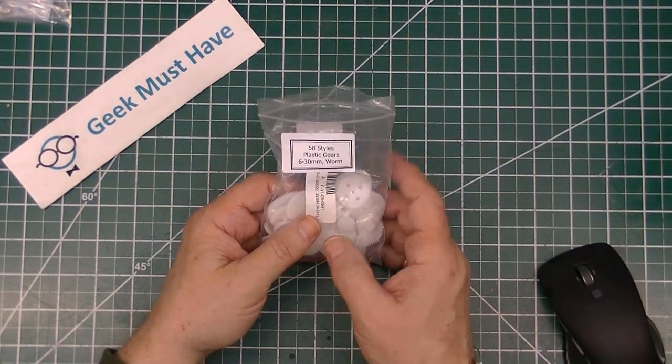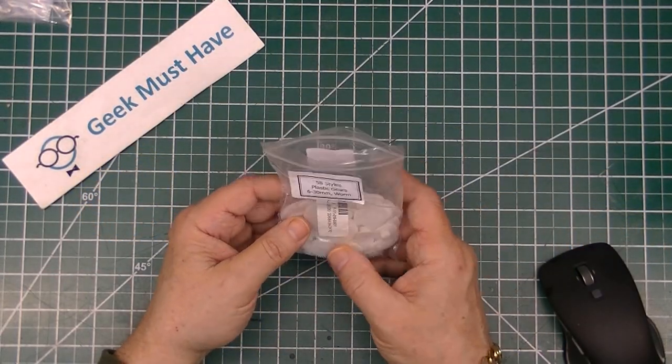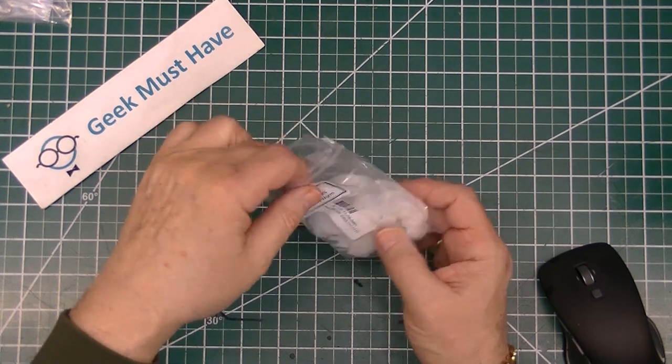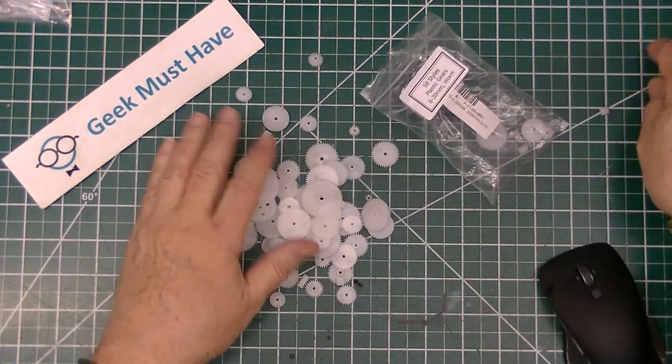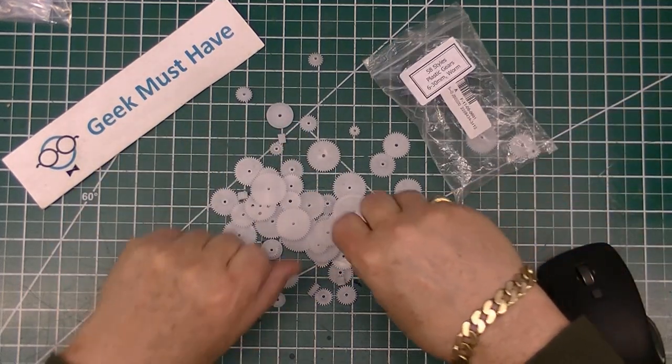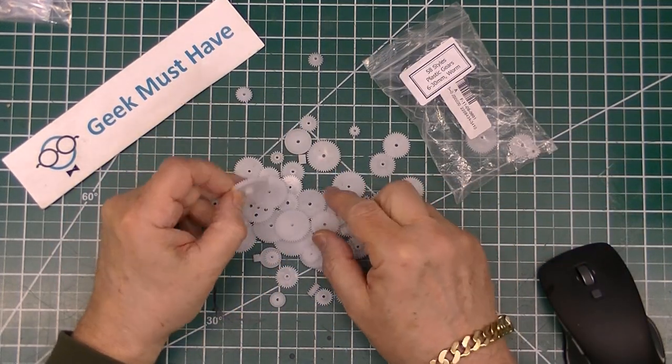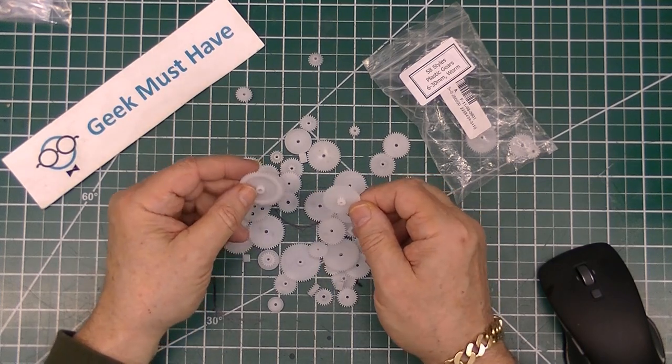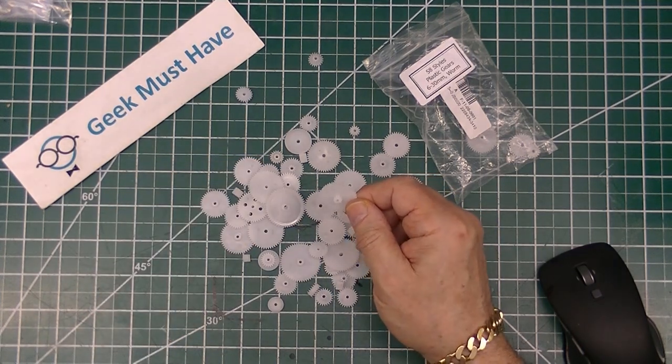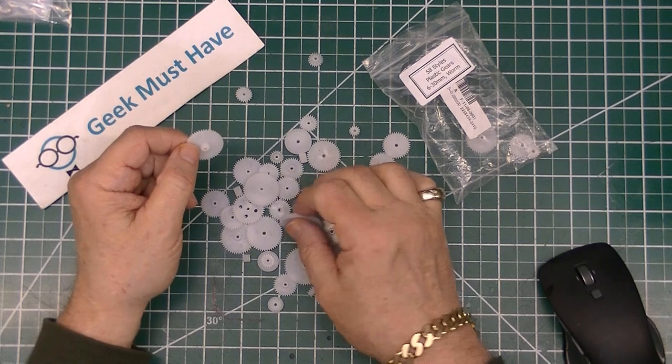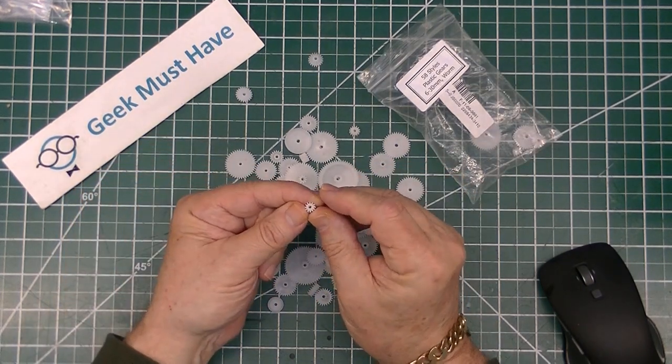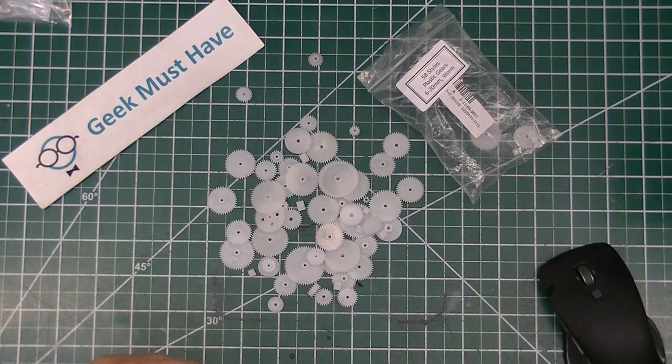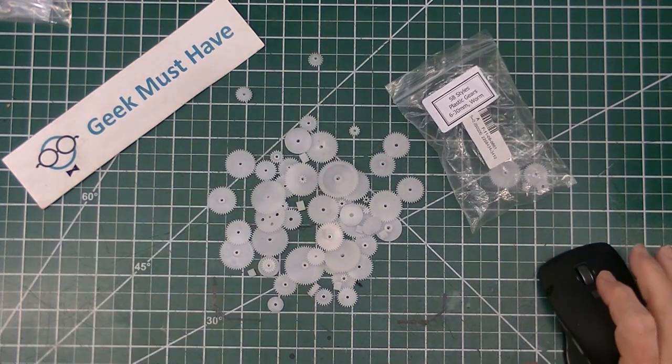The next item is another bag of gears. These are 58 styles of gears, anywhere from 6 to 30 millimeters across. It's a big bag of gears with shafts varying anywhere from 1 millimeter all the way up to about 3 millimeters, and a bunch of little gear motor gears as well.